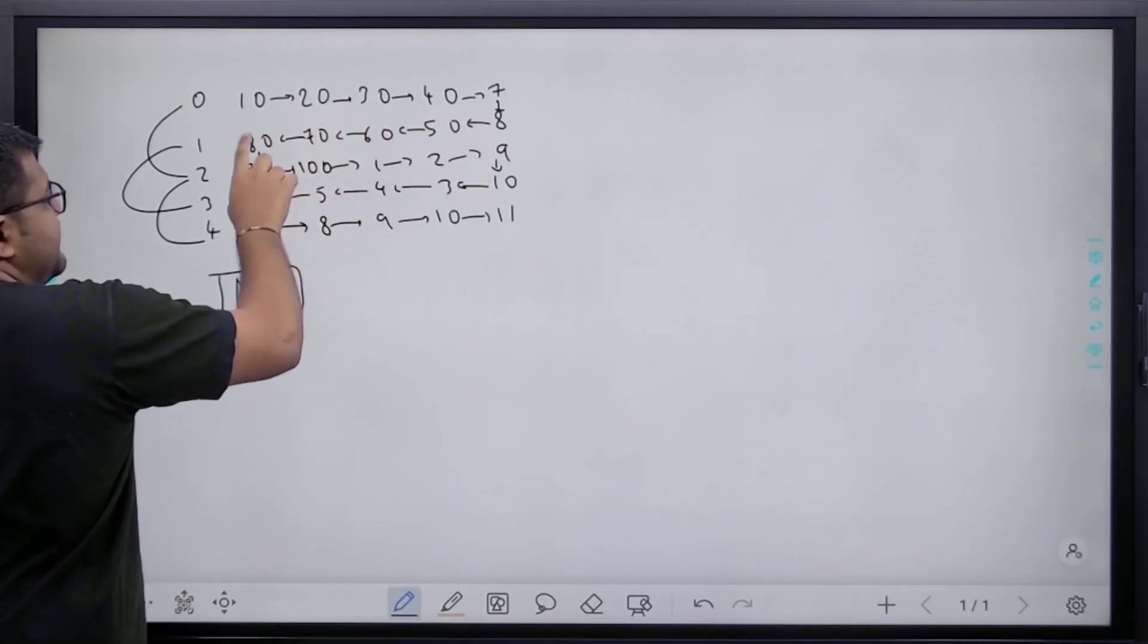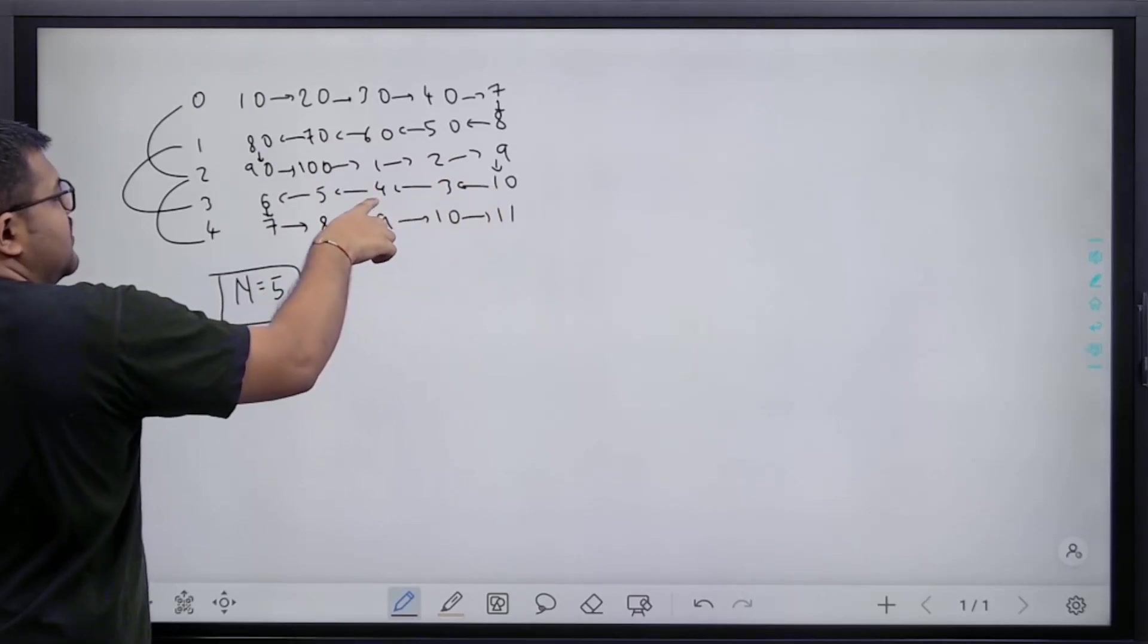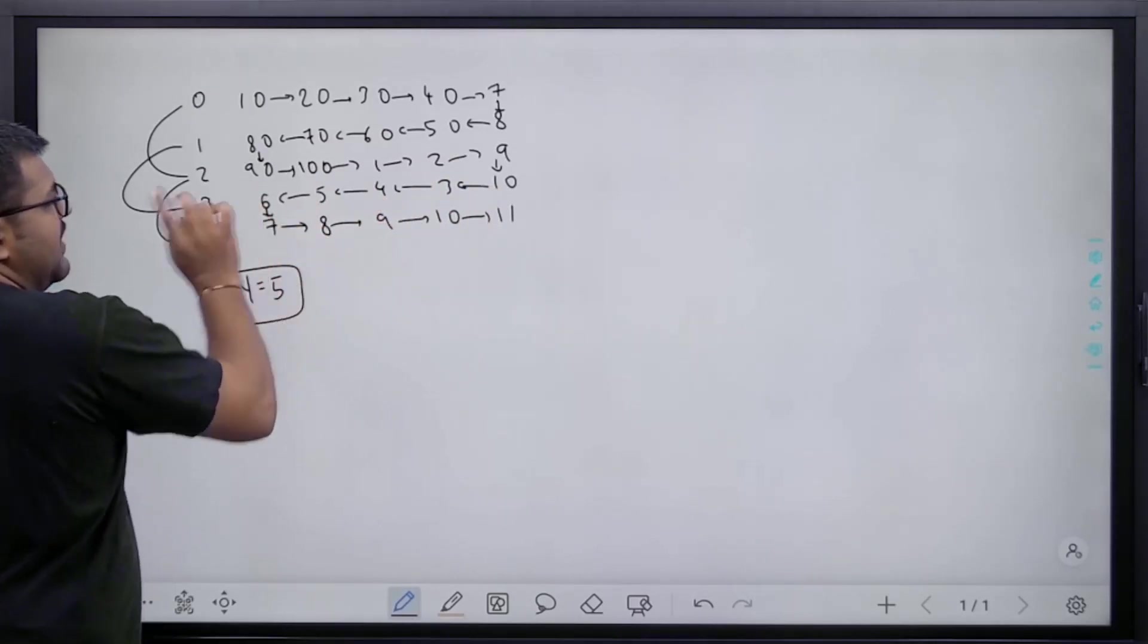For the rows which have odd numbers 1 and 3, we are traversing from right to left: 8, 50, 60, 70, 80, and 10, 3, 4, 5, and 6.